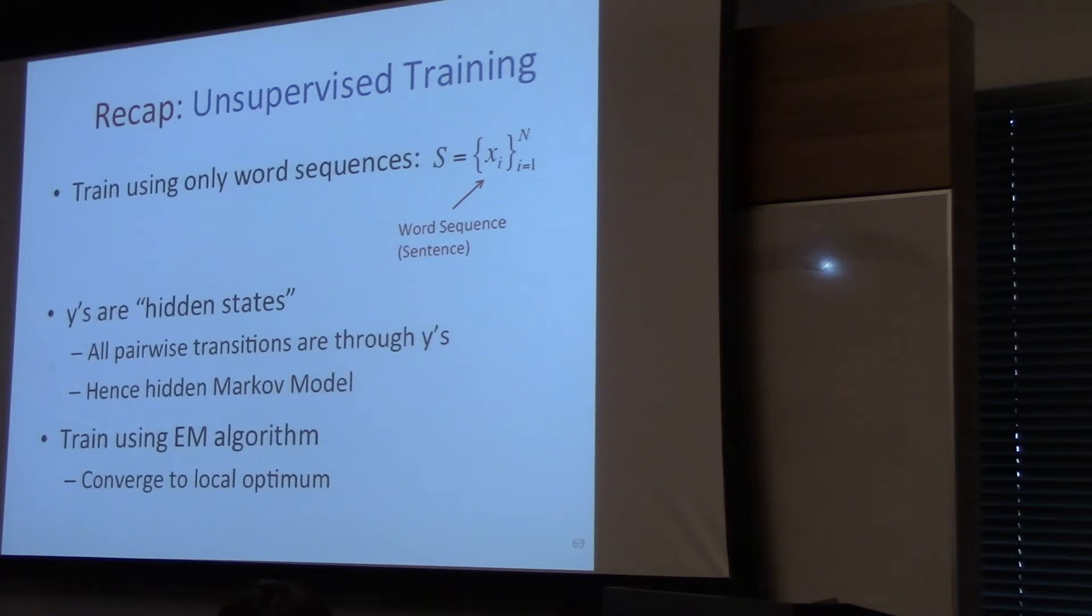So just to recap, the unsupervised training of hidden Markov models were given only the word sequence. And then we want to train our full model on maximizing the likelihood over what we observe in the training data. The Ys are hidden. And we train using the EM algorithm. It's guaranteed to converge to a local optimum.